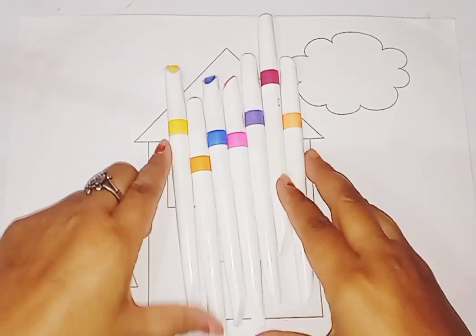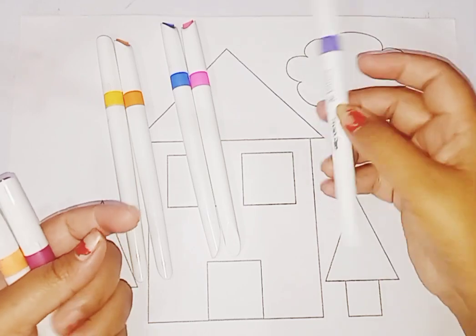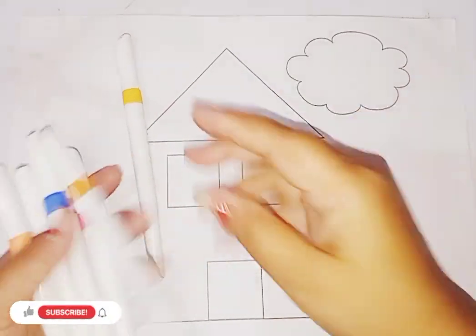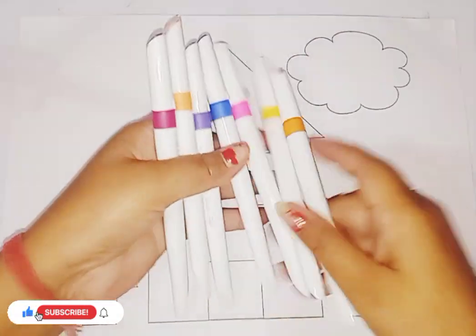Let's learn some color names. This is peach color, wine color, purple color, pink color, blue color, brown color, yellow color. These are colors.